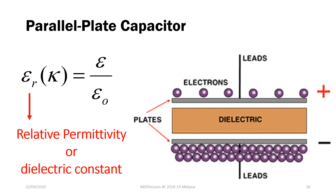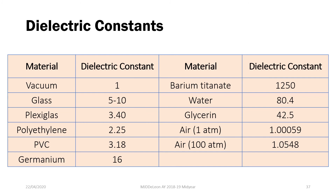By convention, we have what we call relative permittivity. The relative permittivity is just the permittivity of the material, epsilon, over epsilon naught — the permittivity of vacuum — making the handling of permittivity easier. This relative permittivity is also known as the dielectric constant, which tells you how good a dielectric the material is. Vacuum has a dielectric constant of 1, the smallest possible, and depending on the material, it can range from poor to very good dielectric.